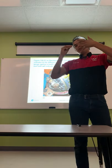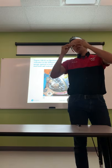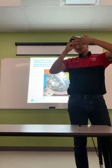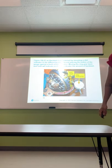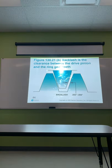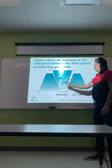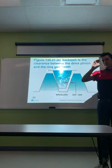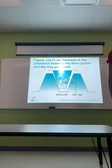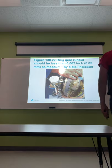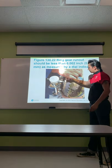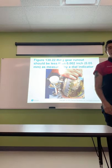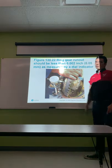If you have too much backlash, your pinion depth is too far out — you're coming up on the smaller side of the cone. If there's not enough backlash, you'll have premature wear from rubbing too hard. Ring gear runout should be less than 0.002 inches or 0.05 millimeters as measured by a dial indicator. As you rotate the ring gear, watch the gauge to see how bent it is — it's solid steel but you can still get warpage.